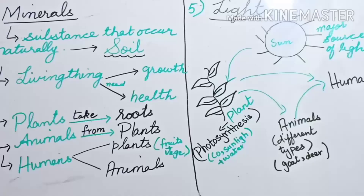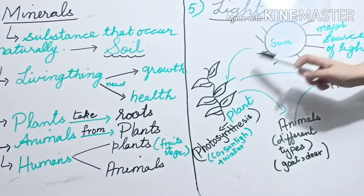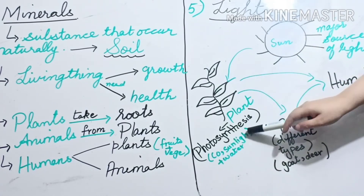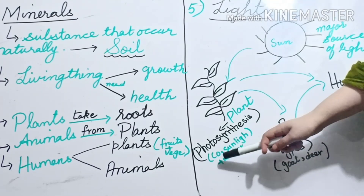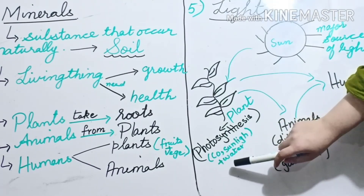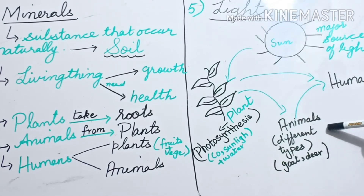Now we are going to talk about the next component of the environment: light. Our major source of light is the sun. Sunlight is needed by every living thing for their life functions. Plants take sunlight for the process of photosynthesis, which is needed by plants to make their own food. For photosynthesis, a plant needs three major things: carbon dioxide, sunlight, and water.